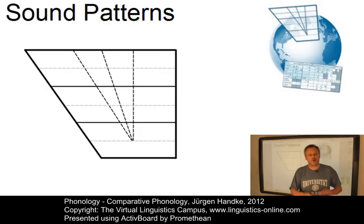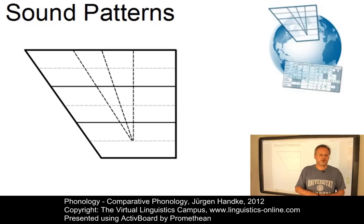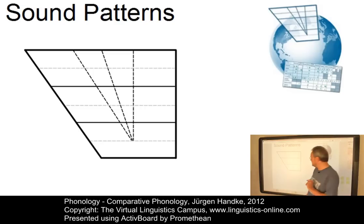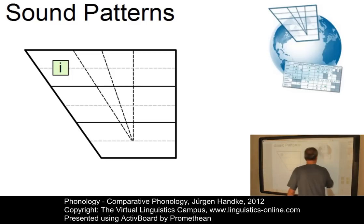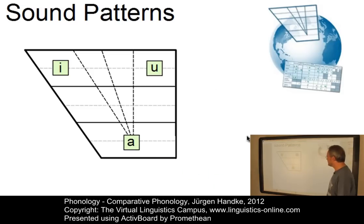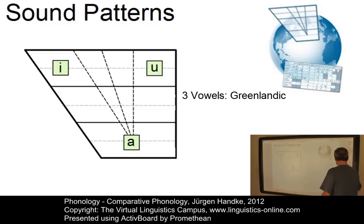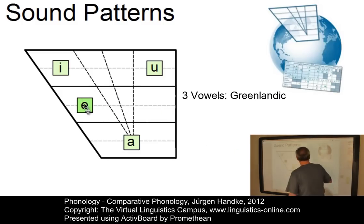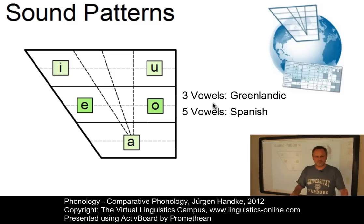An interesting question in comparative phonology concerns the distribution of vowels on the cardinal vowel chart. Most languages have their vowels evenly and widely distributed over the chart, exhibiting a triangular vowel pattern. The simplest type of language is a language with three vowels only, where we have a high front vowel and a high back vowel and a low central vowel. Such a triangular pattern can be found in Greenlandic. If we extend this pattern to Spanish, with a mid-front vowel and a mid-back vowel, we see again a congruent pattern where each front vowel has a corresponding back vowel counterpart.